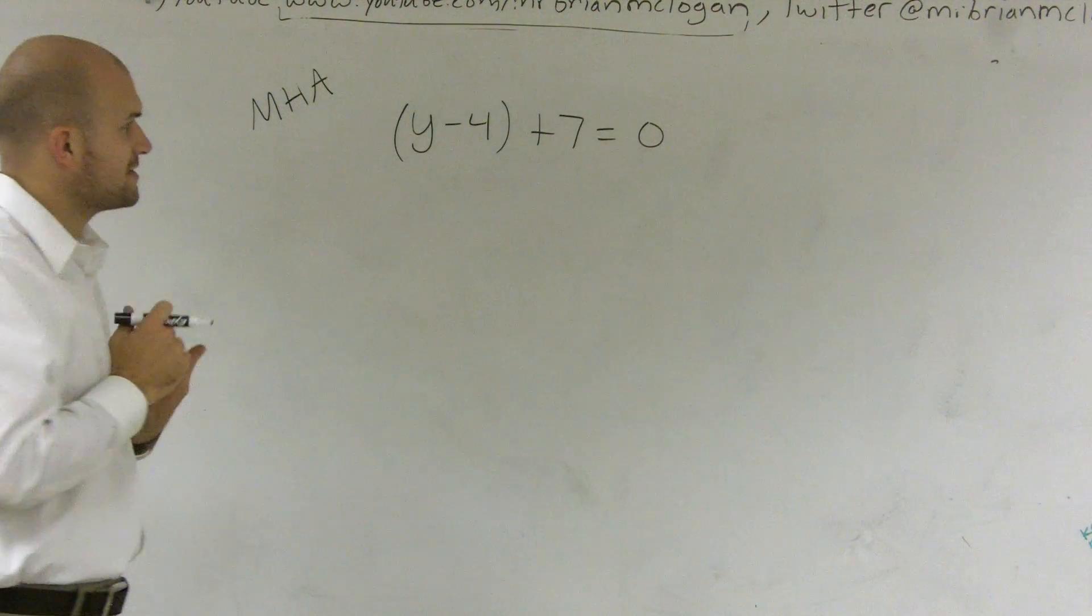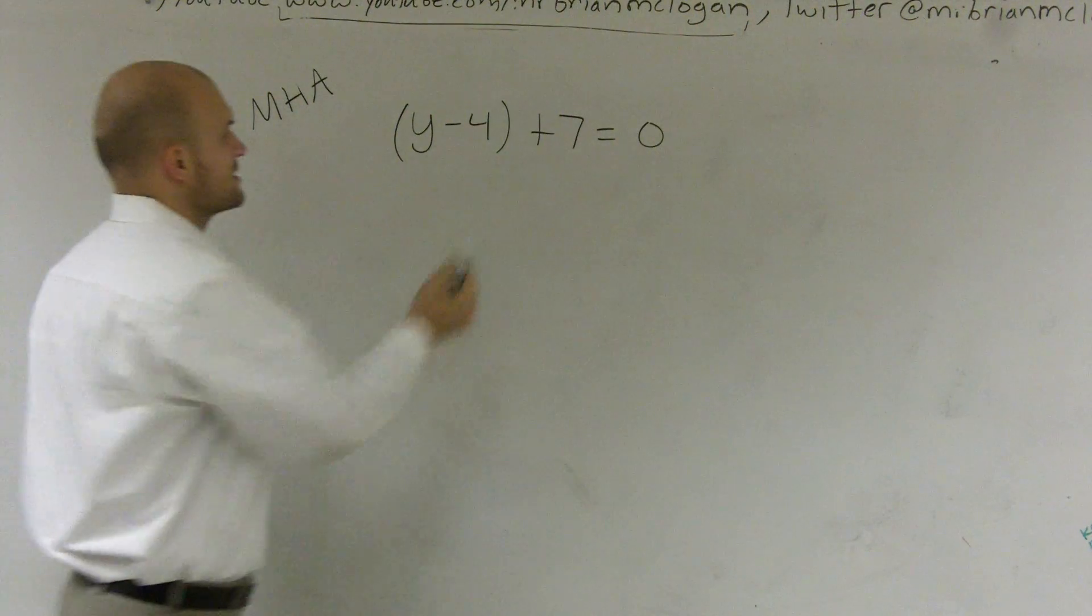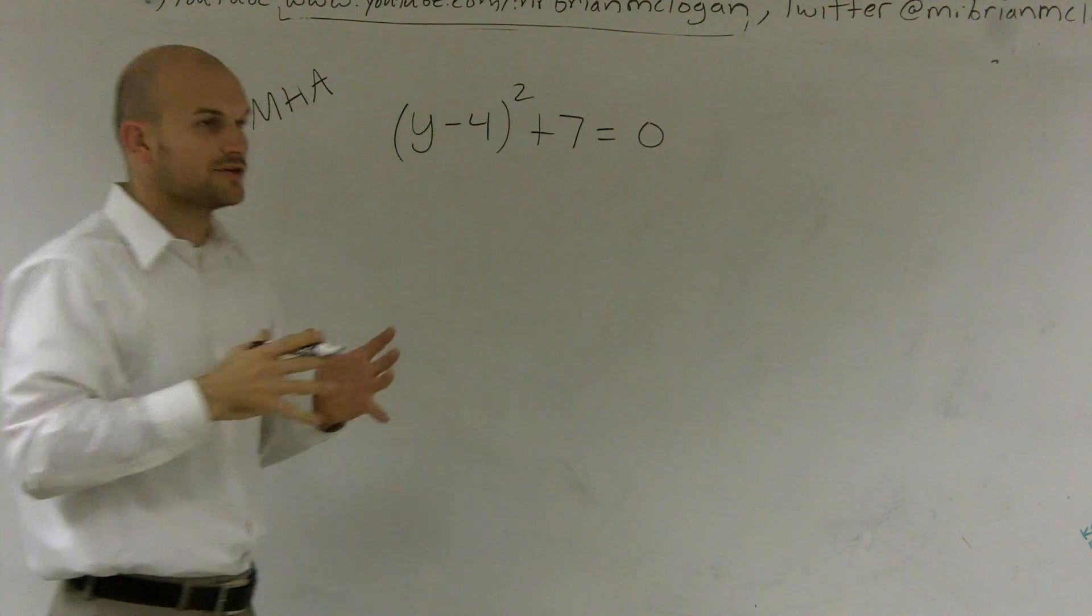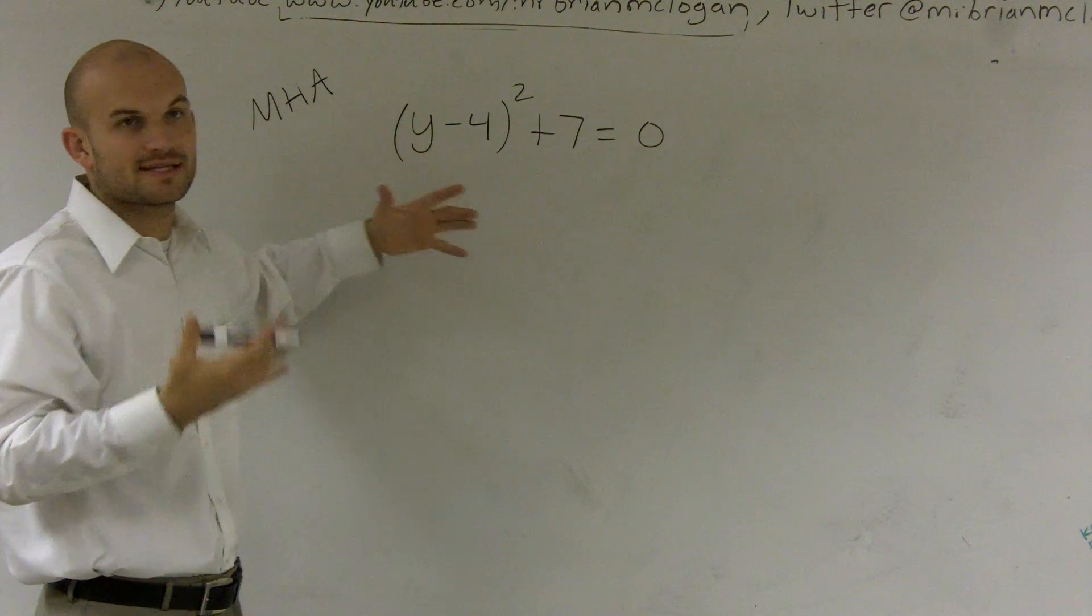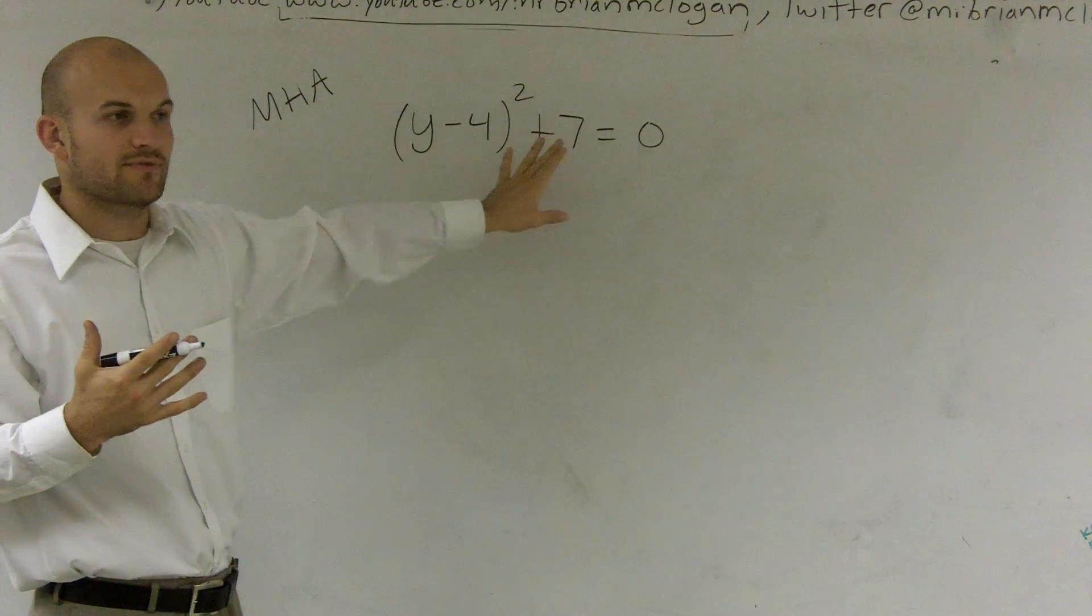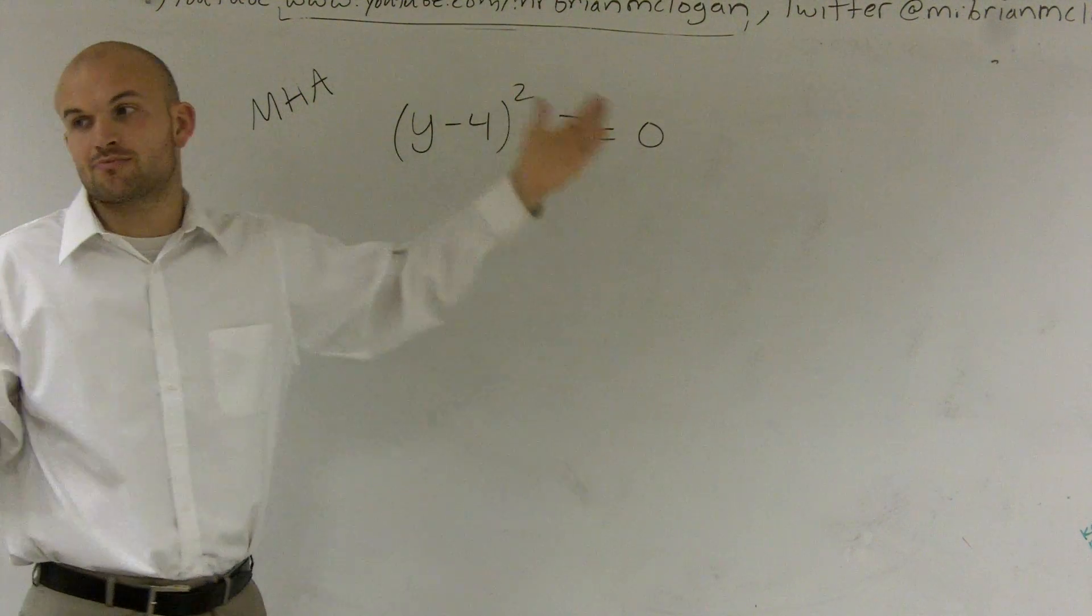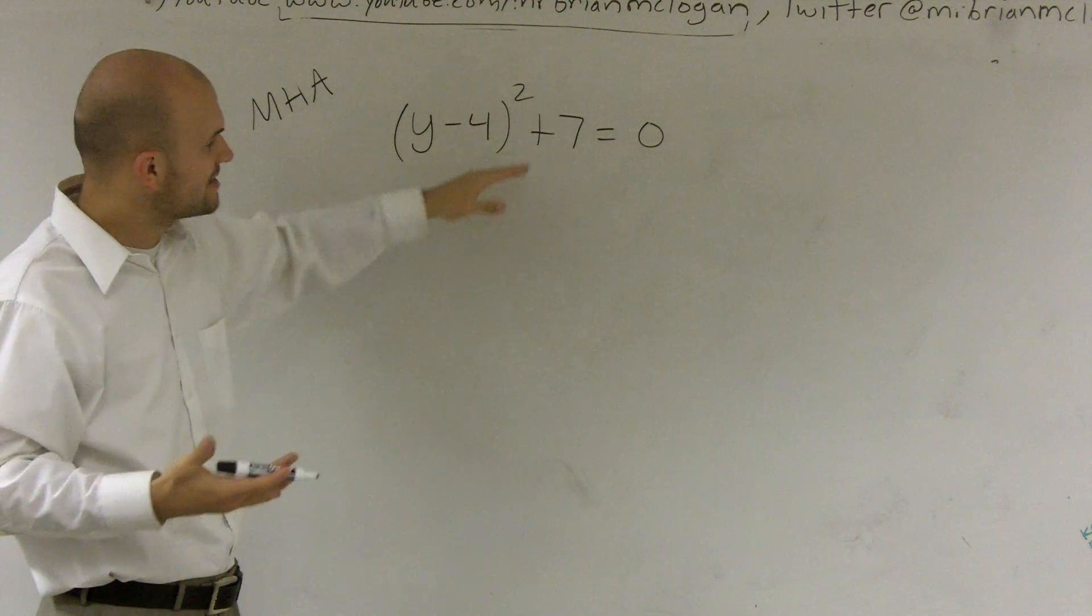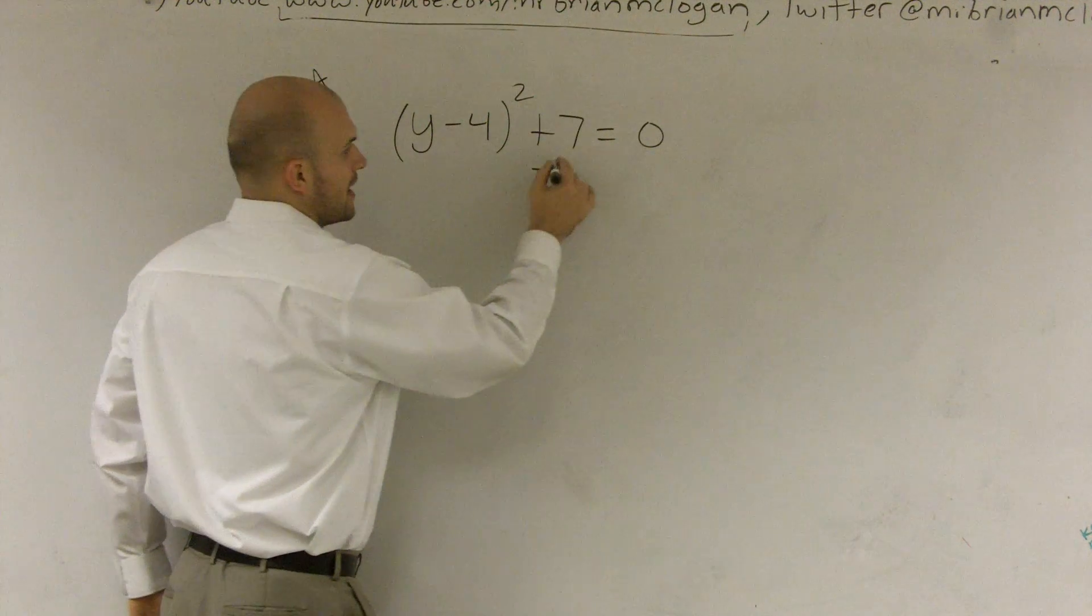Okay, so I need to solve this problem by using the square root property. This is actually a square. So what I need to do is first isolate this variable. The first thing I do is I can get rid of the 7. To get rid of the 7, I'm going to use subtraction property of equality, which pretty much says I can subtract 7 on both sides.